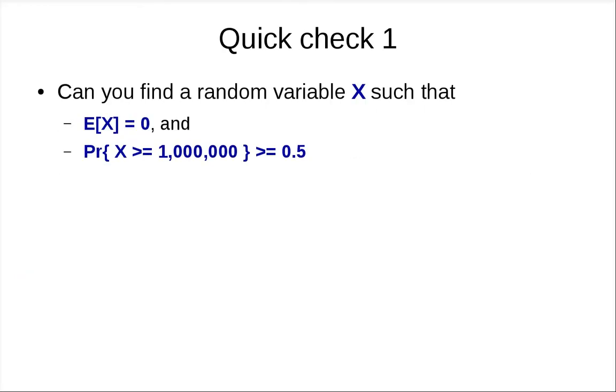Let's look at one example. We might have a random variable X where the expected value E[X] = 0. But is it possible that X can have large values with high probability? Can you find a random variable X such that this is true?